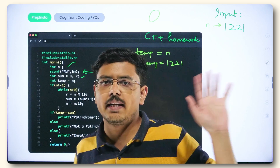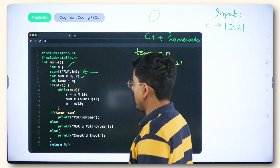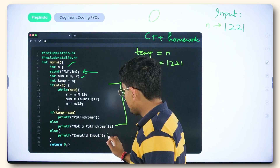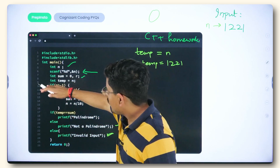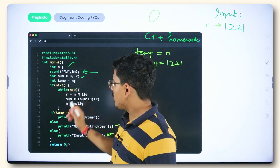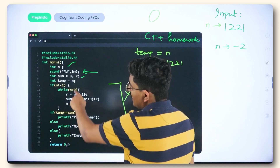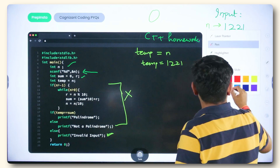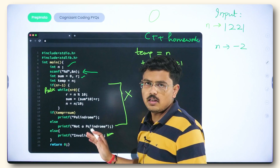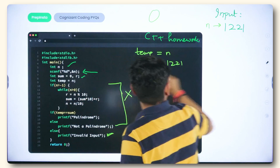Next, we check: if n is greater than minus 1, we proceed — meaning if it is not a negative number. For example, 0 is a palindrome — if you reverse it, it stays 0. So anything above minus 1 is treated as valid input, since negative numbers start from minus 1. If this condition is false — say n is minus 2 — it would skip the block and print 'invalid input' directly.